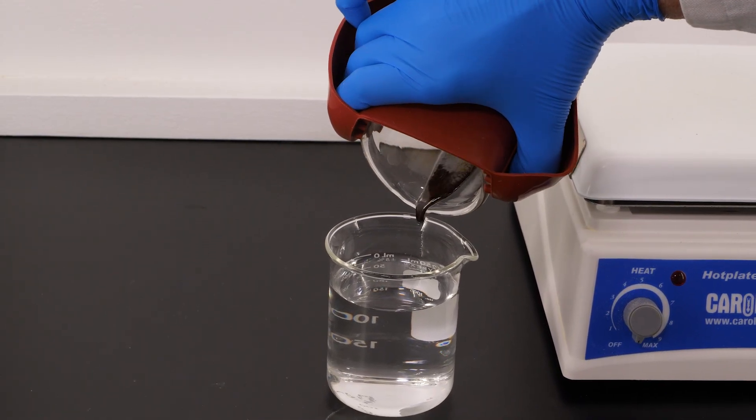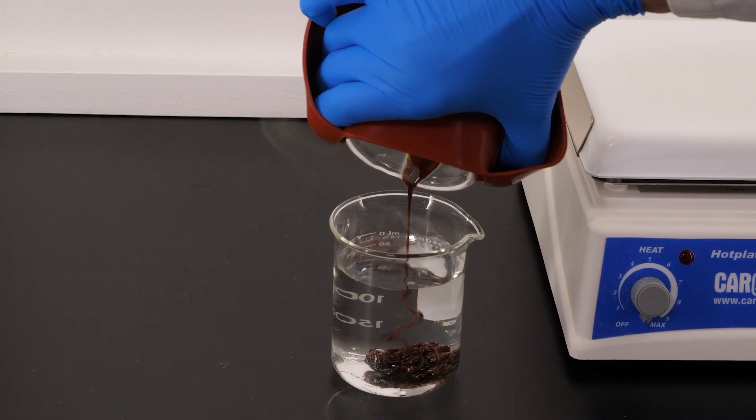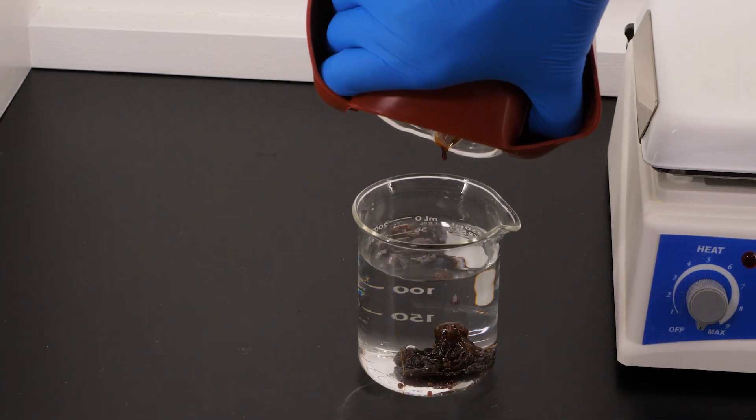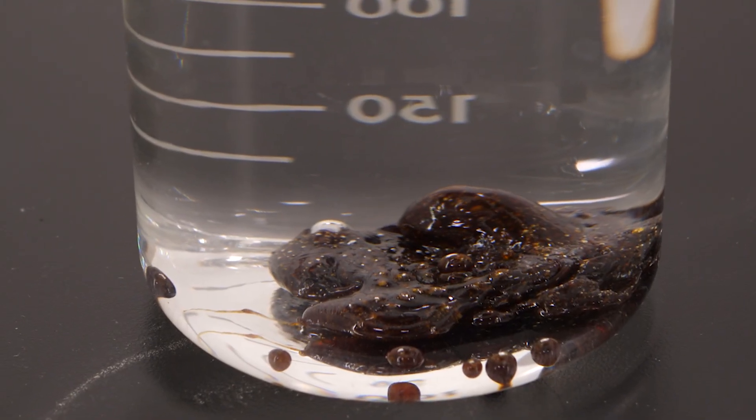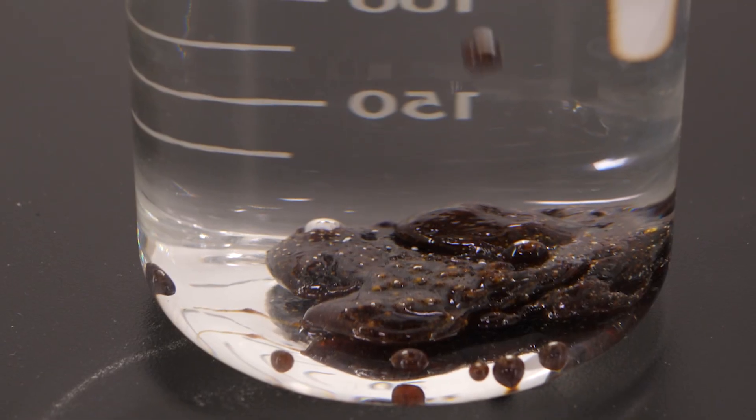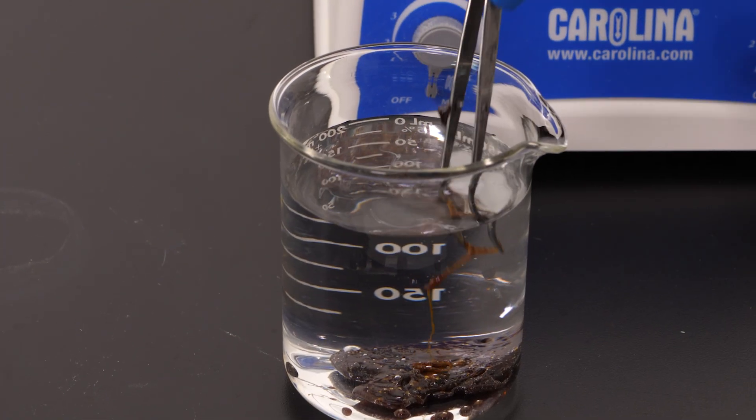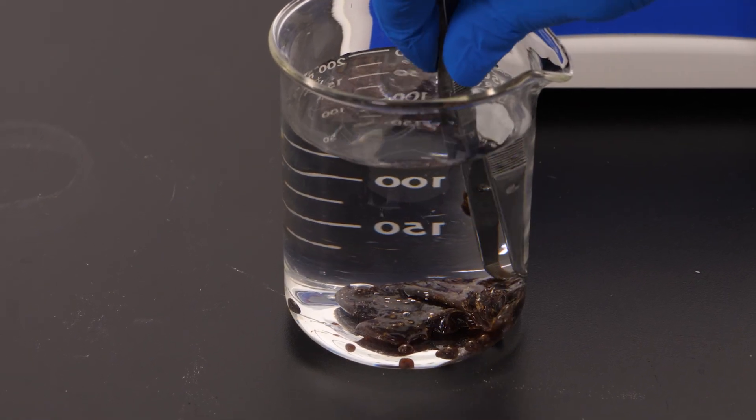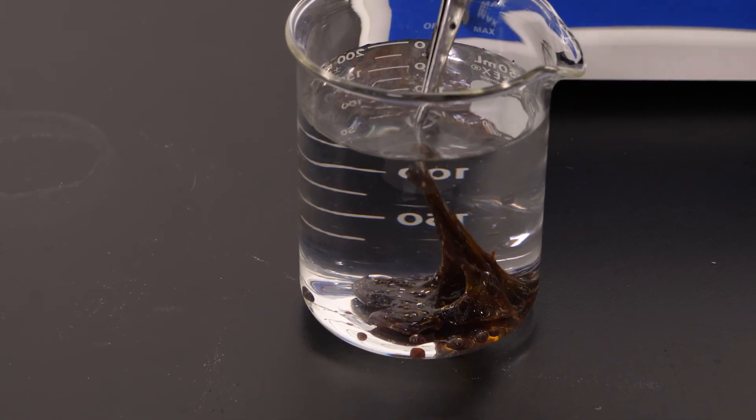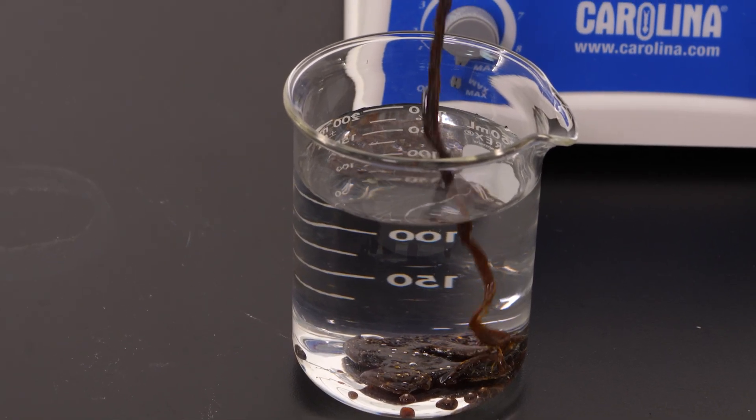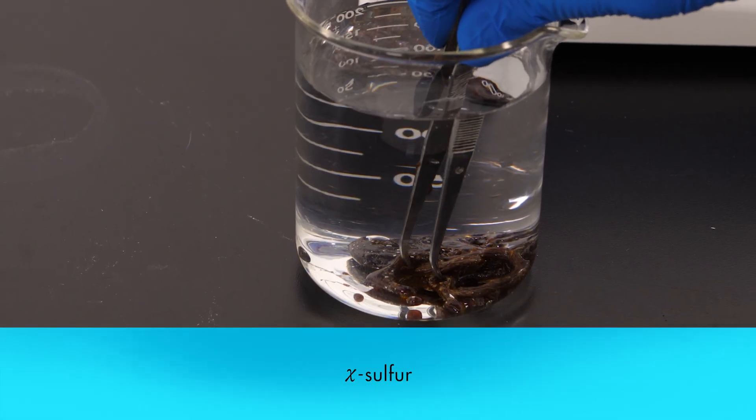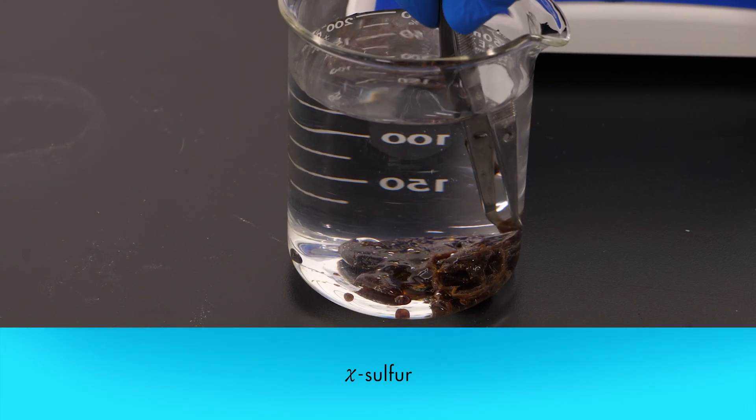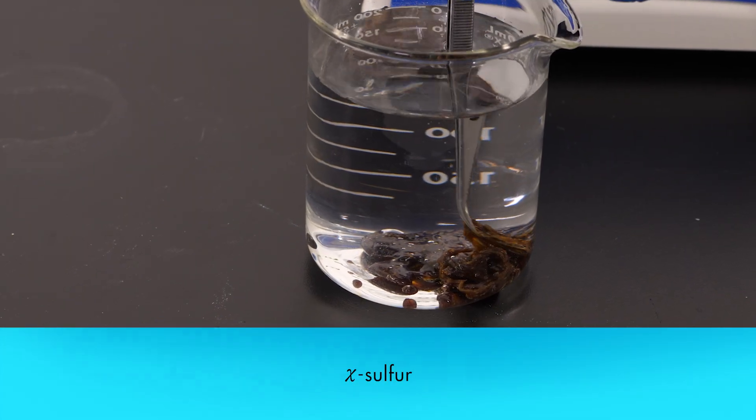To see the next allotrope of sulfur, we need to rapidly cool this black liquid sulfur in a beaker of cold water. Because the liquid sulfur cooled rapidly, the intermolecular forces did not have enough time to reform as crystals. Instead, the sulfur remained in long chains of sulfur molecules that formed a rubbery, pliable amorphous sulfur. Amorphous sulfur is an allotrope called chi-sulfur. If the chi-sulfur is allowed to remain undisturbed for a while, it will eventually revert to alpha-sulfur.